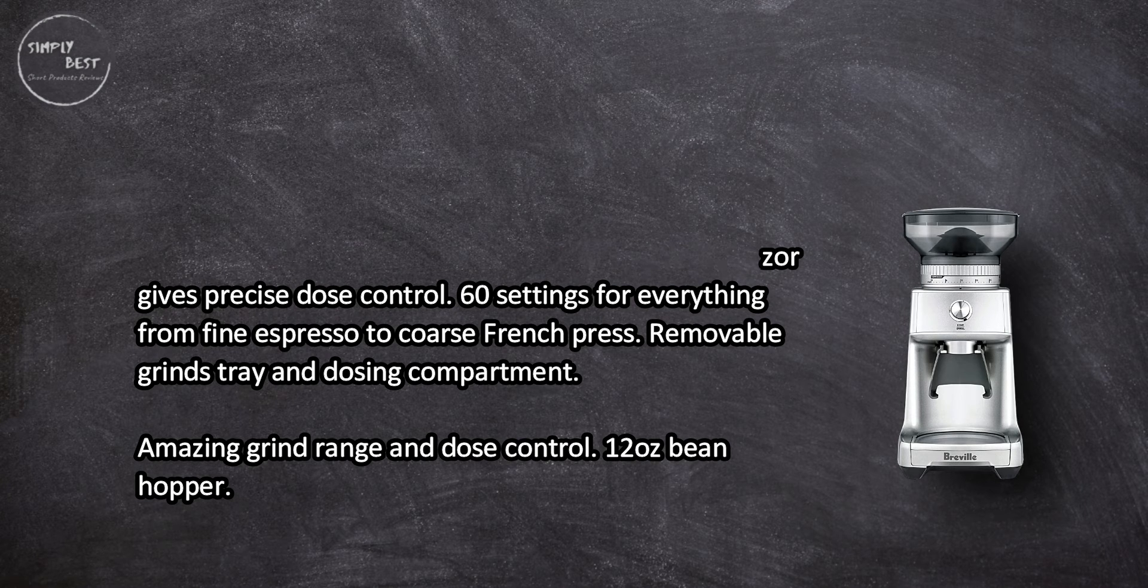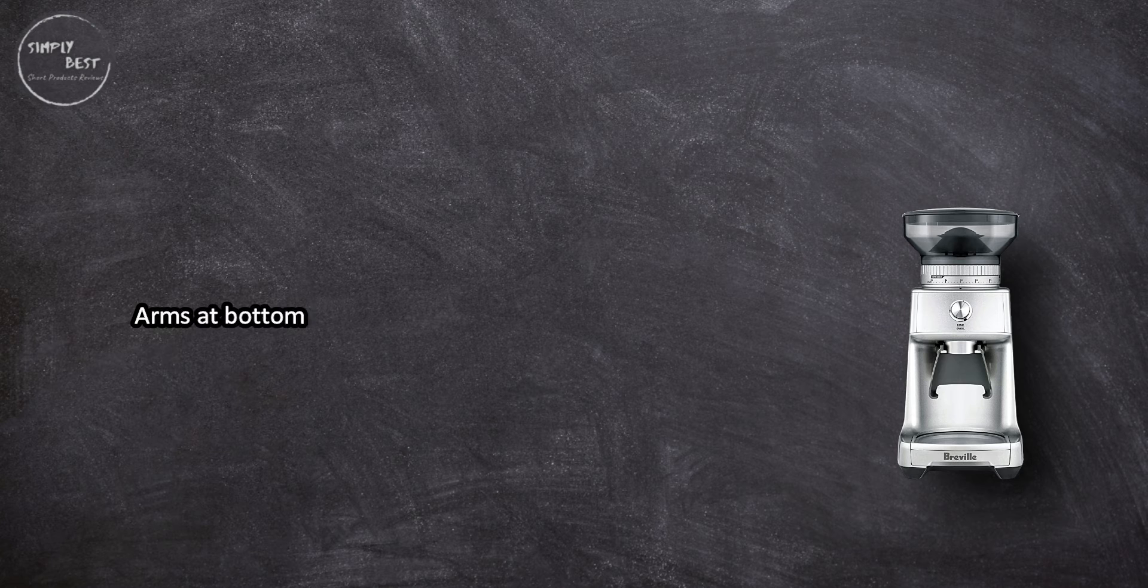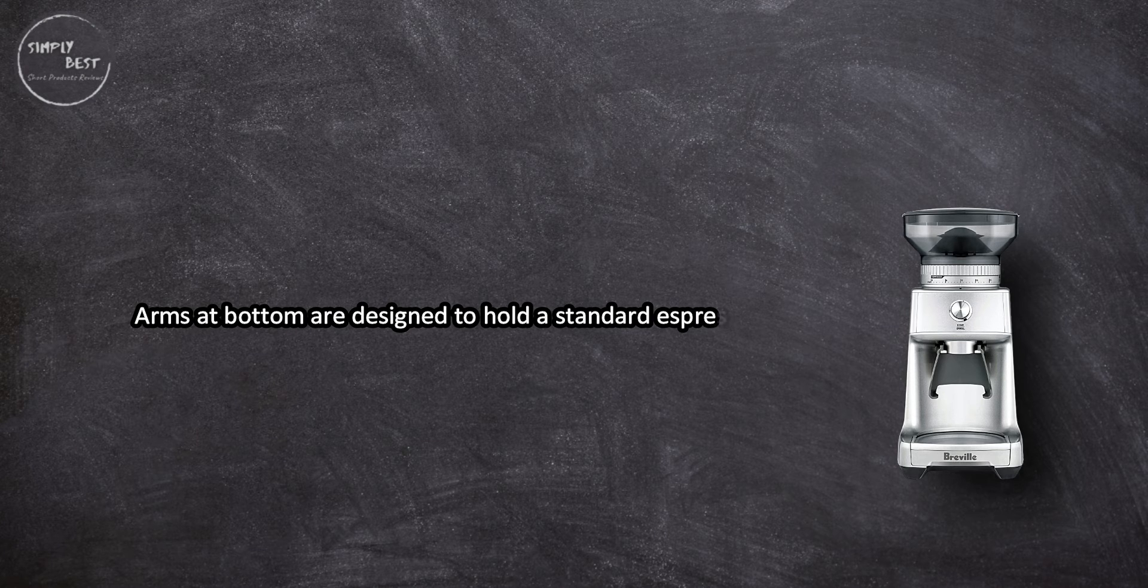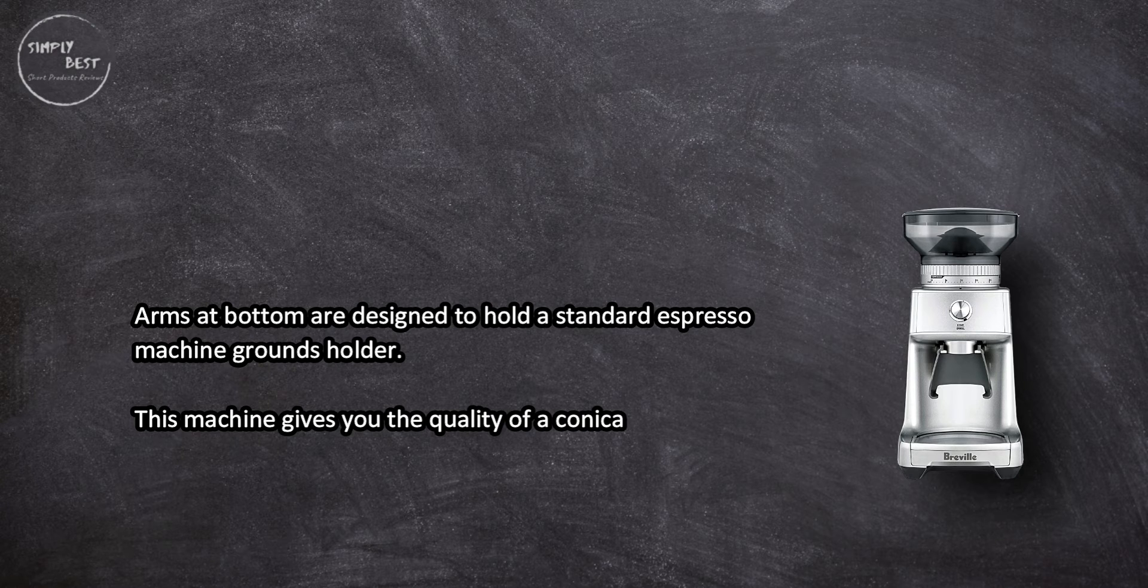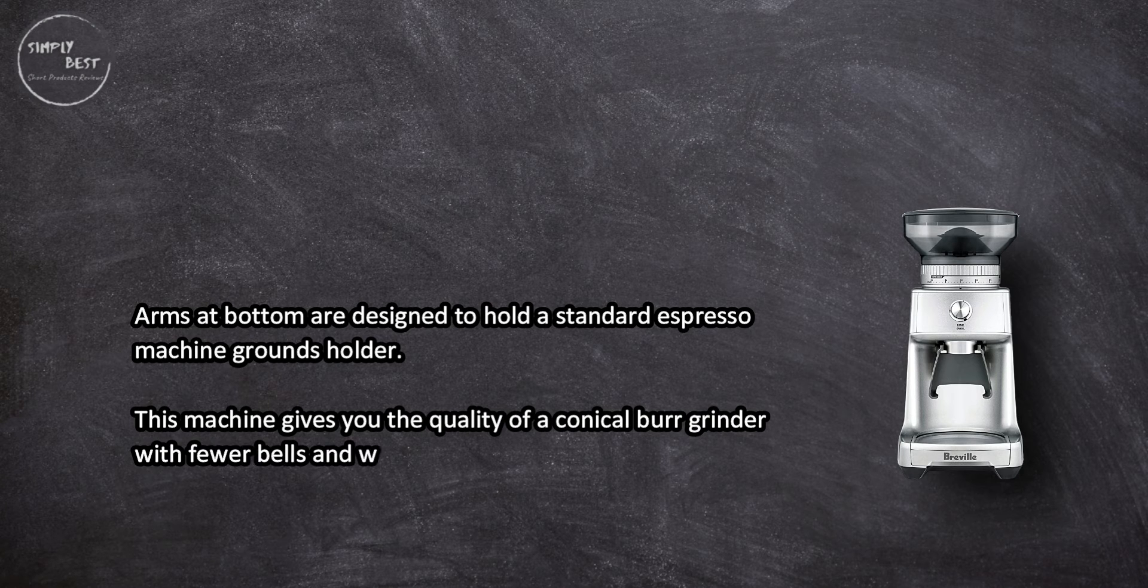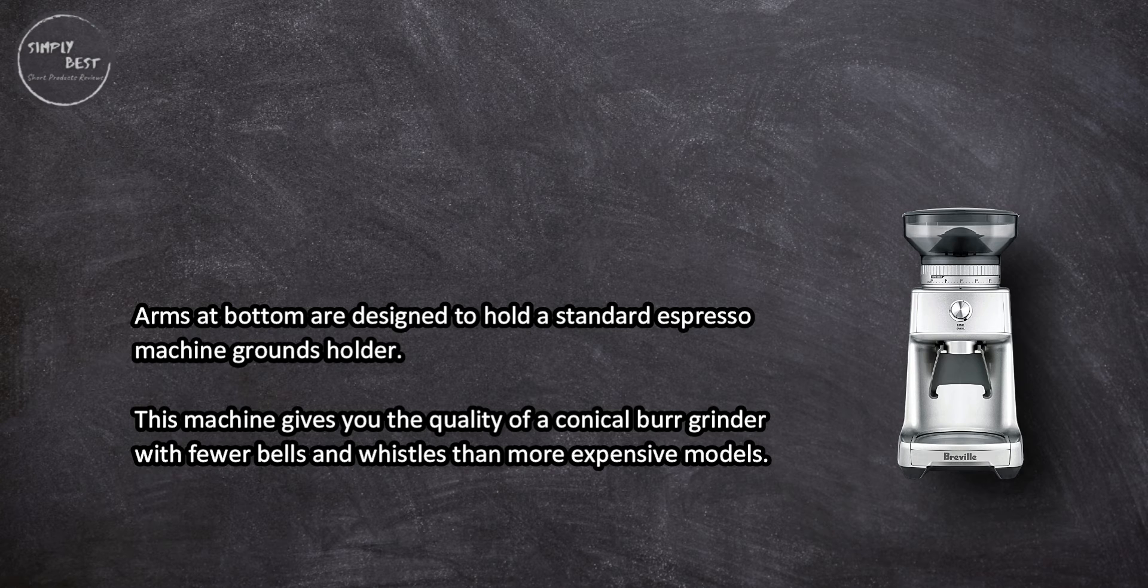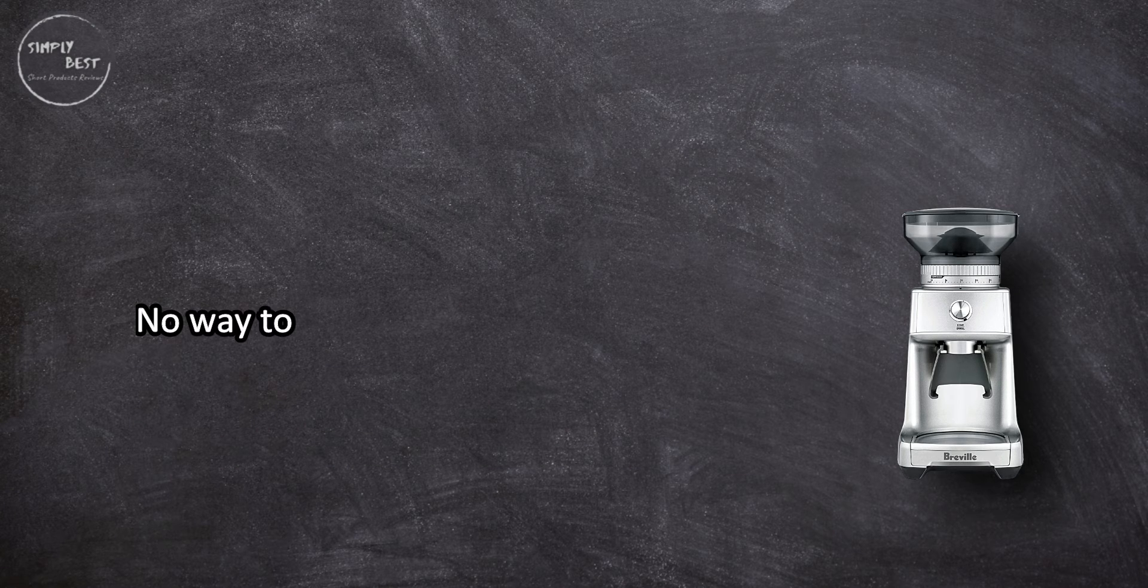12 ounce bean hopper. Arms at bottom are designed to hold a standard espresso machine grounds holder. This machine gives you the quality of a conical burr grinder with fewer bells and whistles than more expensive models. No way to set the grind time.